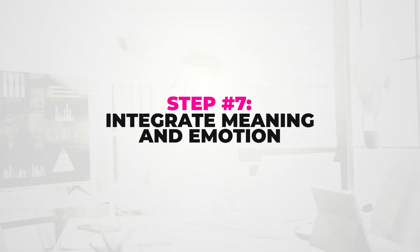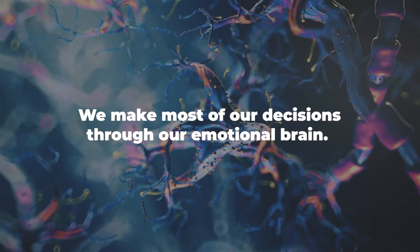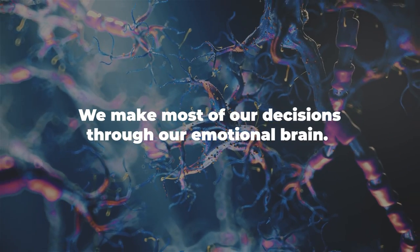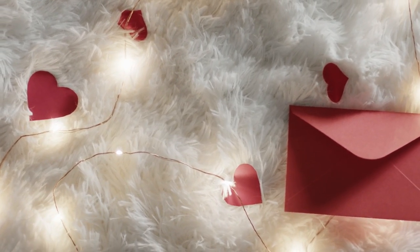Step number seven: integrate meaning and emotion. With a comprehensive list of key messages, you can now reverse-engineer these messages to uncover the emotions that each one will appeal to. Remember, we make most of our decisions through our emotional brain. So every one of your branding messages must consider the emotion it's appealing to and use the relevant language and tone to evoke that emotion. Over time, your audience will feel a connection because the message is crafted from empathy and emotion.